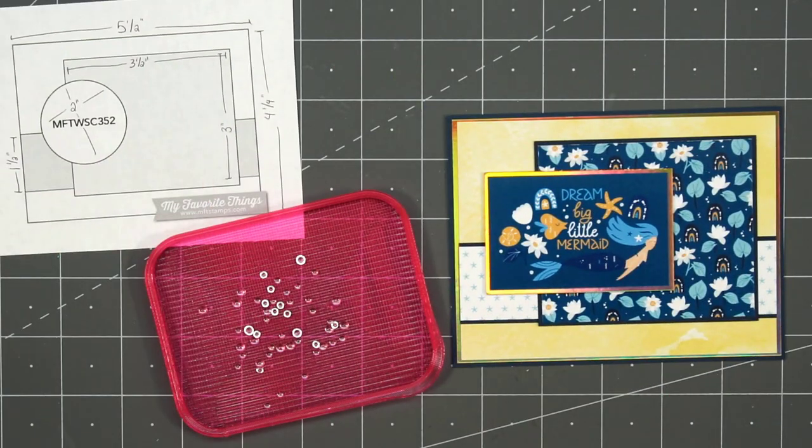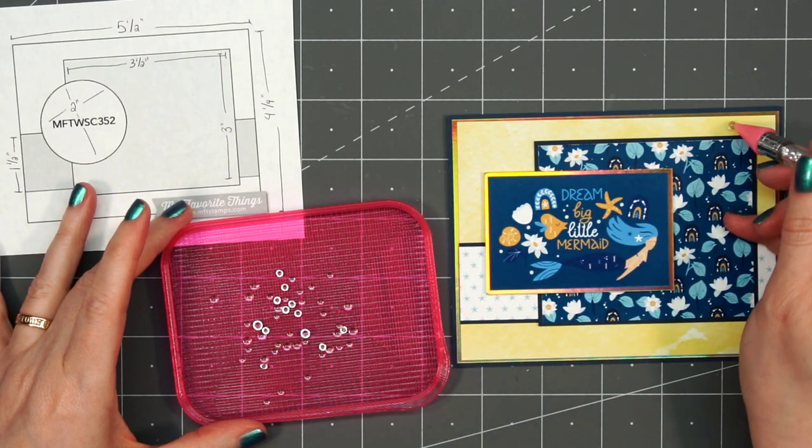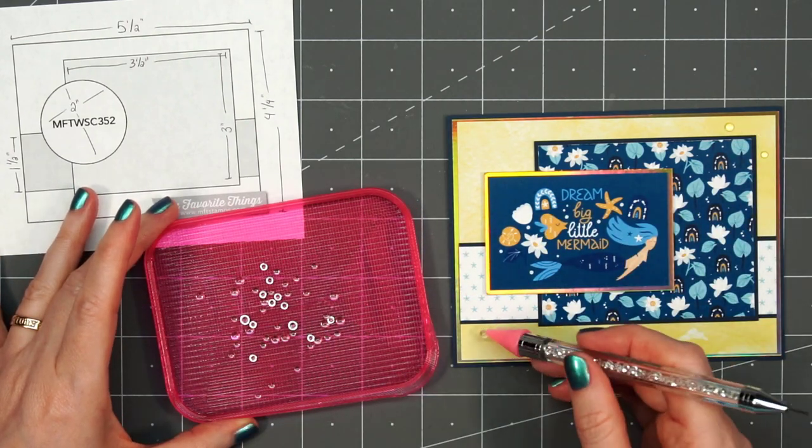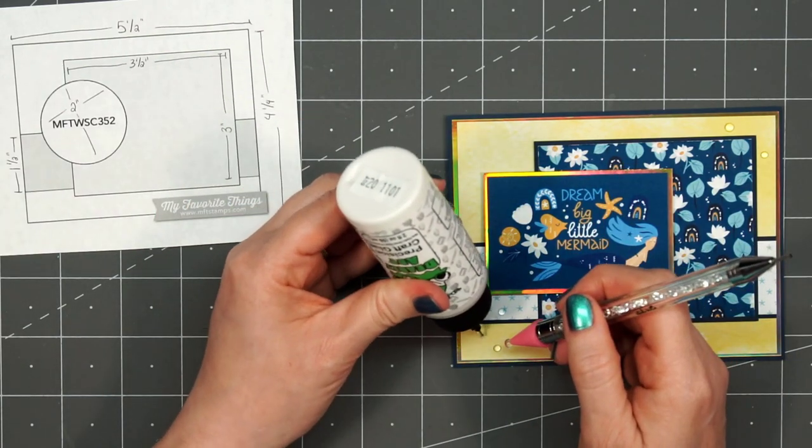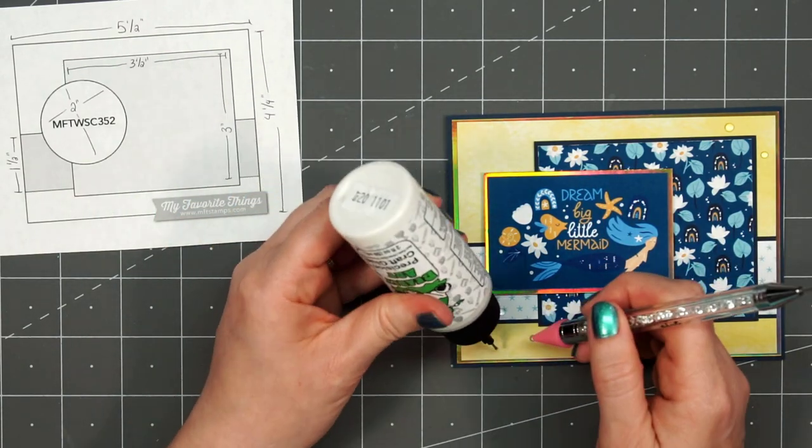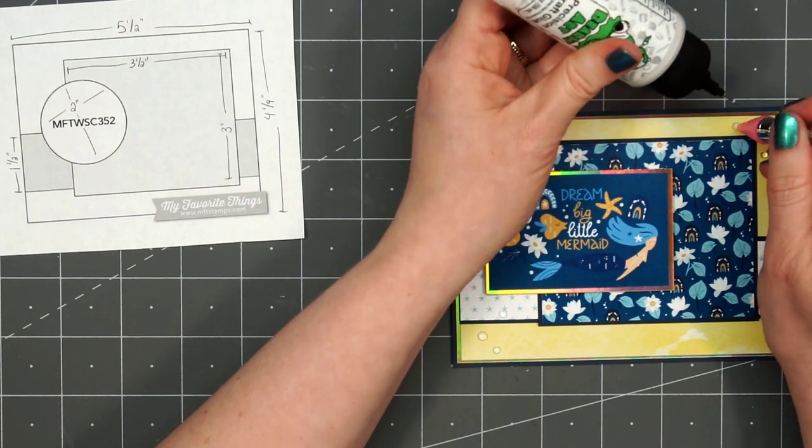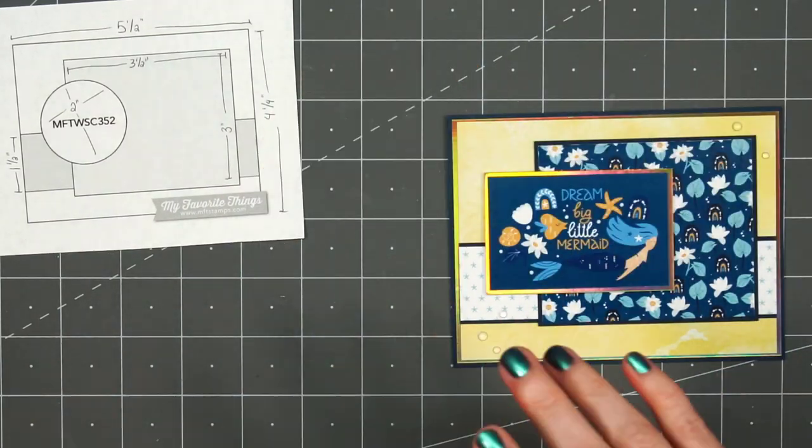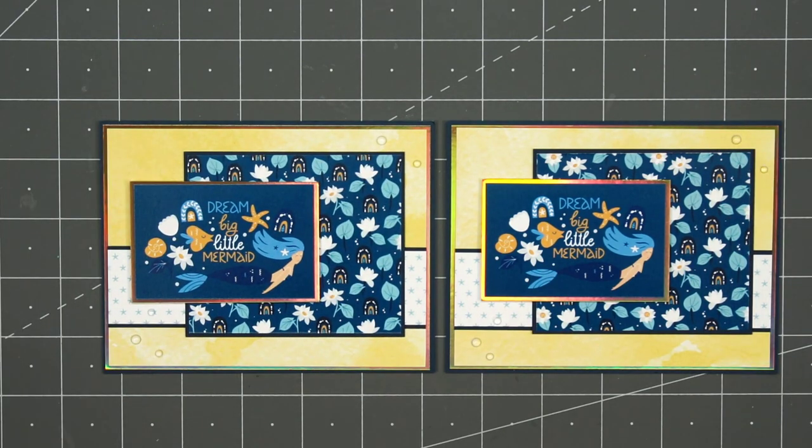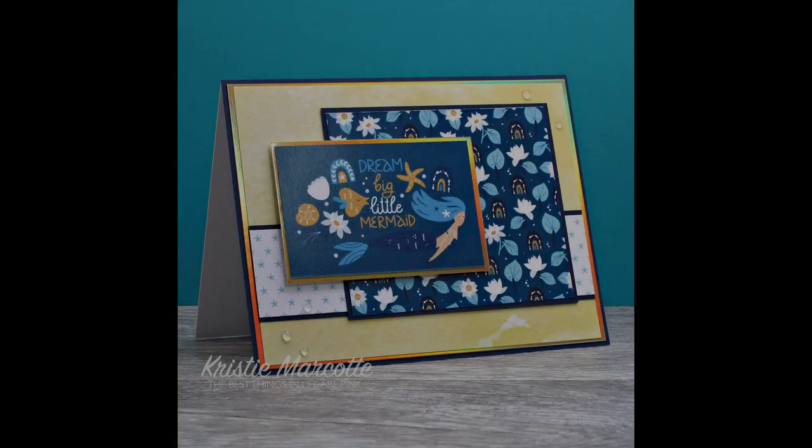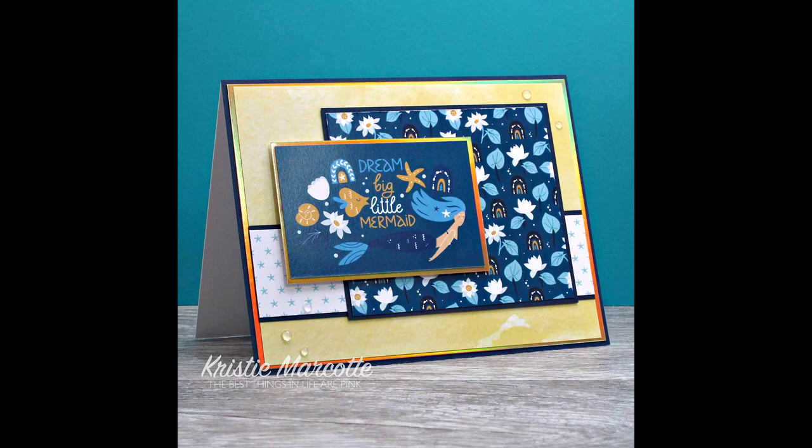Then to finish off the card, I'll bring in some more of the clear dew drops. I think it just works well with this underwater paper collection. I'll add two in the upper right hand corner and three in the lower left hand corner. And there is my finished card. Overall, it's a fairly simple card design, but I think adding those little touches with the dew drops and the holographic cardstock really make a difference.